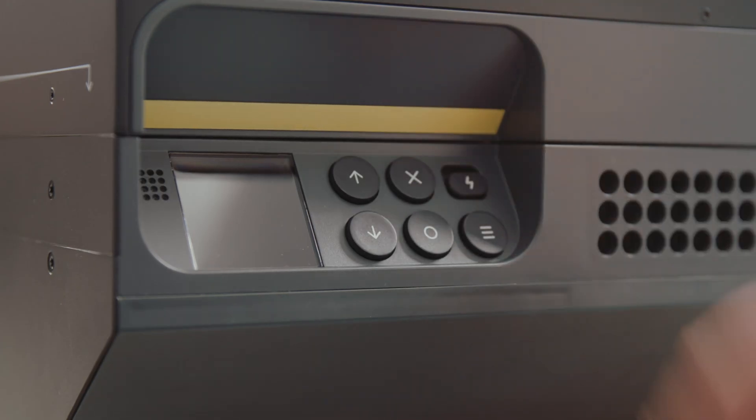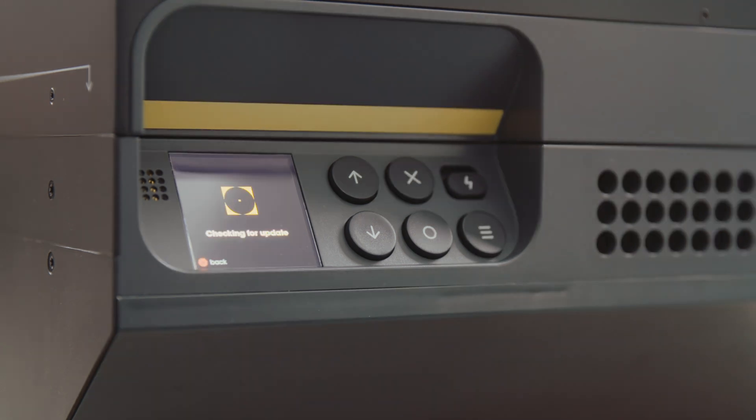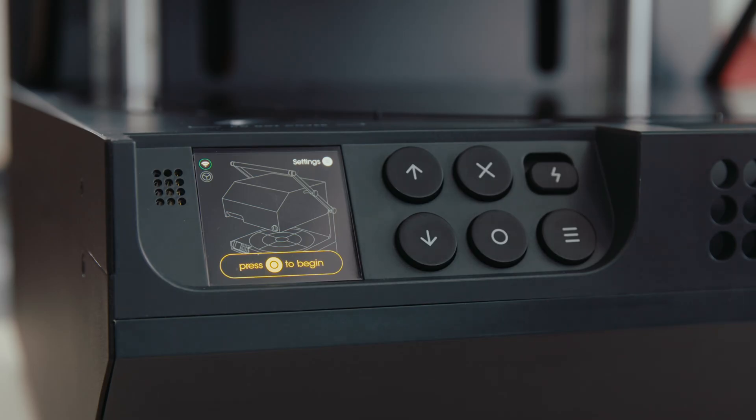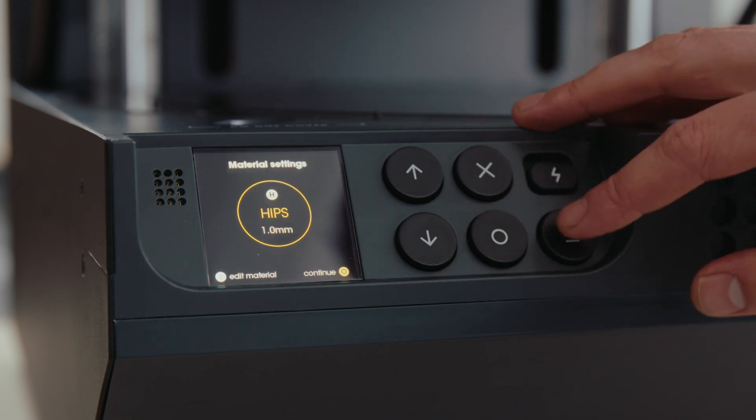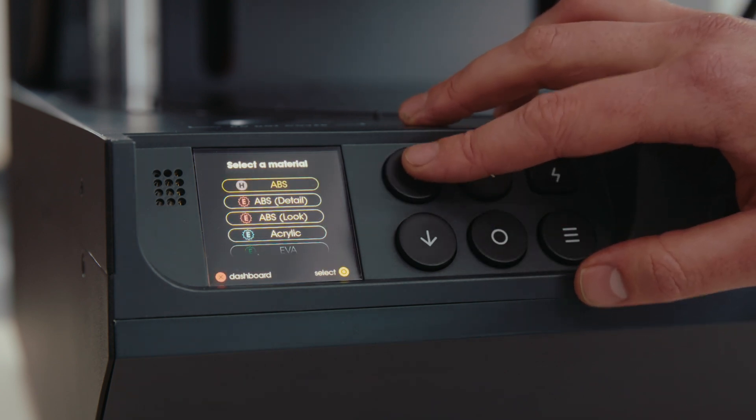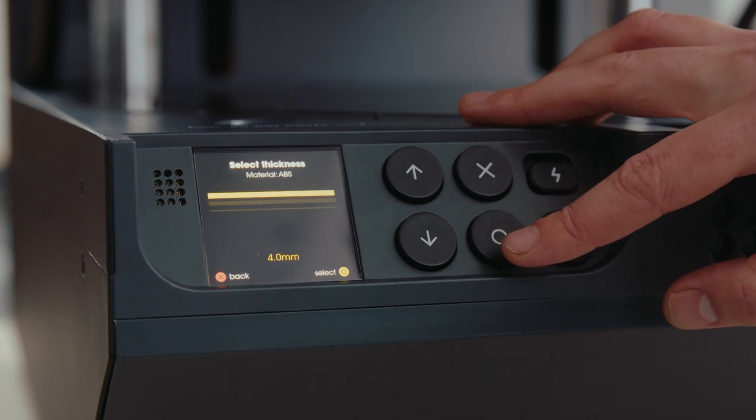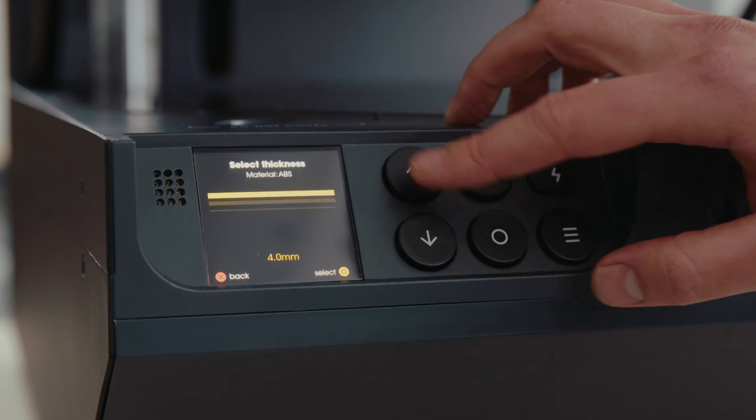Let's go to the multiplier menu and start the forming process. You control the multiplier via the control panel. The multiplier features Wi-Fi connectivity and we add new material profiles with regular firmware updates. Go to the main menu and start the forming process, selecting the material and its thickness.